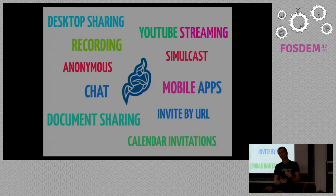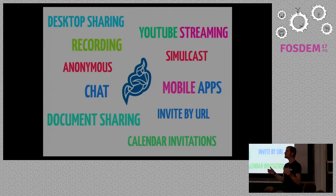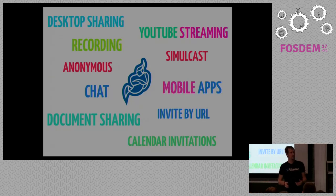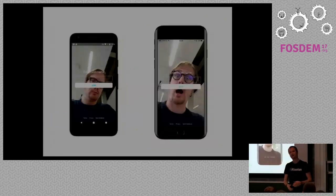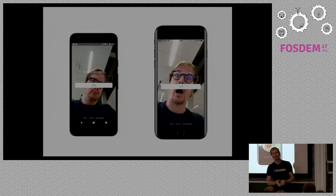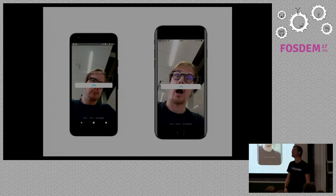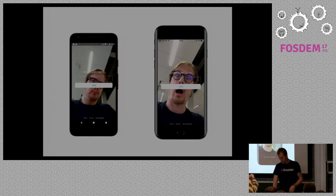We use a combination of techniques here: simulcast, a little bit of SVC to cut down on frame rates in some cases, and also what we call Last N - which means you don't necessarily need to receive all participants' information, because maybe they are not active in the conference. So you can skip the non-active participants and only get the last N active participants, saving bandwidth and CPU. And mobile apps - that's actually one of the things we're actively working on right now. They are in the Apple Store and the Play Store - just search Jitsi Meet and you'll find it.